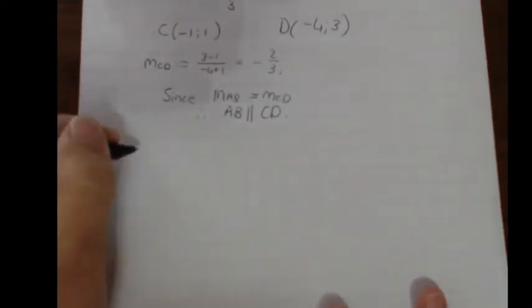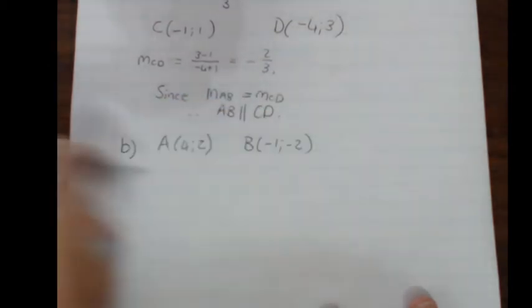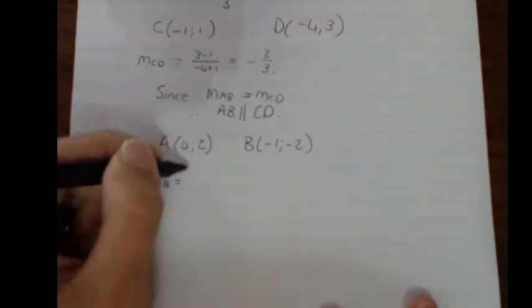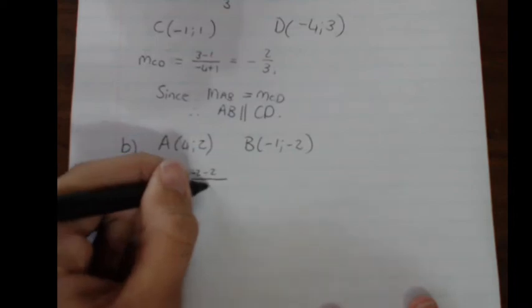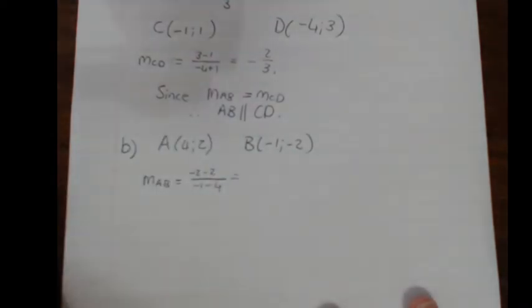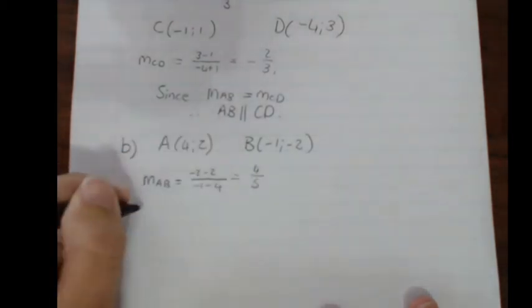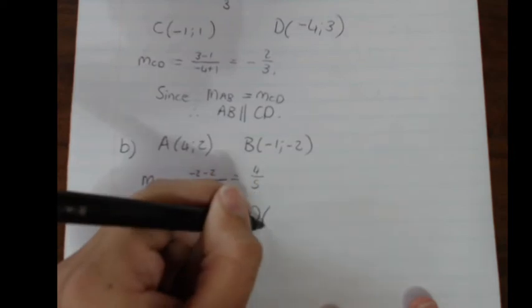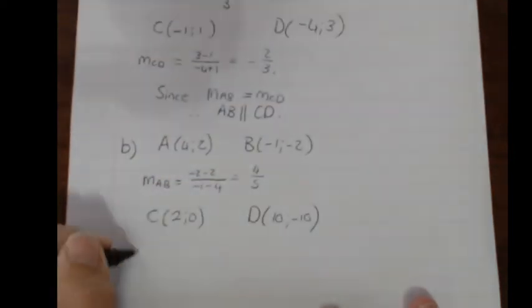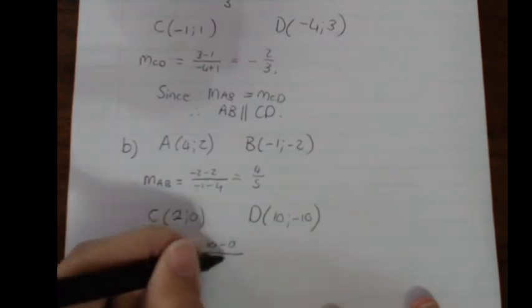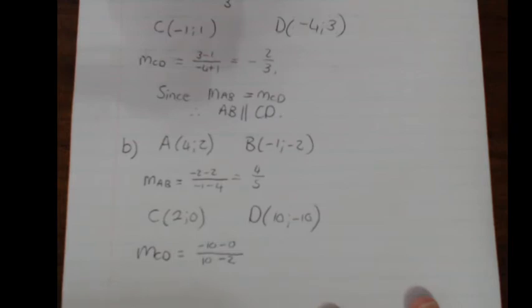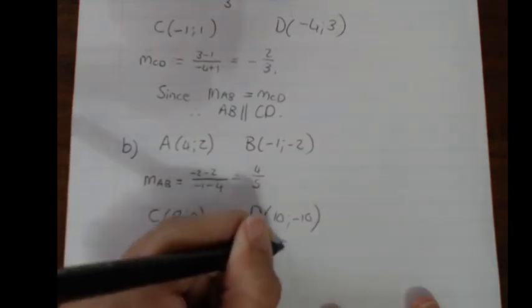For question B, point A is (4, 2) and point B is (−1, −2). The gradient of AB is negative two minus two over negative one minus four, which is negative four over negative five, giving four over five. Then for C at (2, 0) and D at (10, −10), the gradient of CD is negative ten minus zero over eight, giving negative five over four.